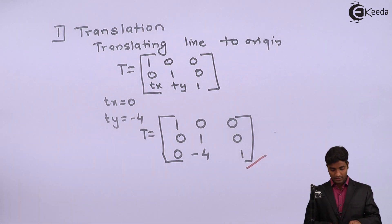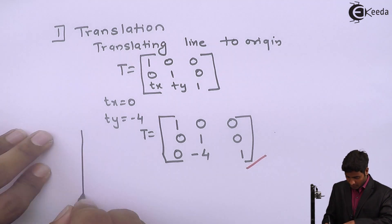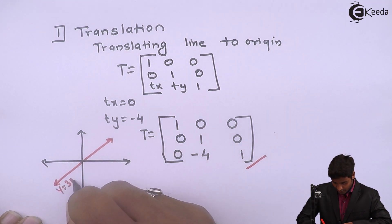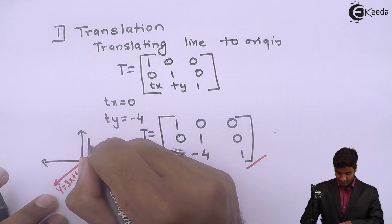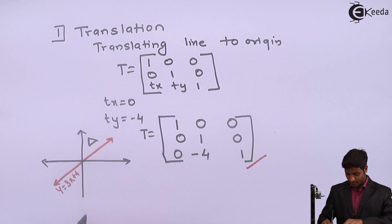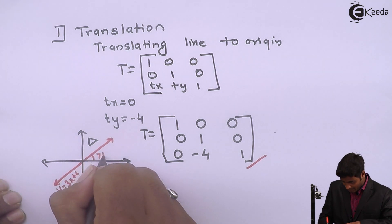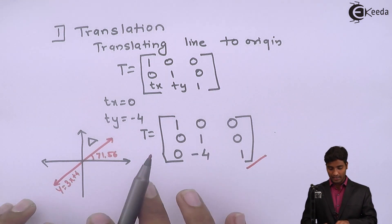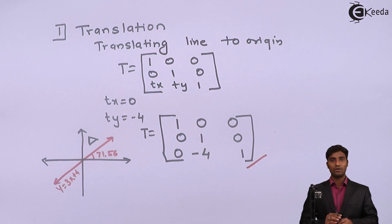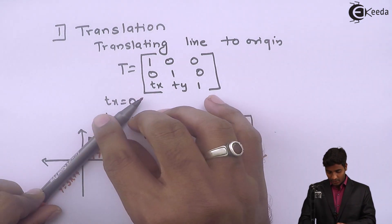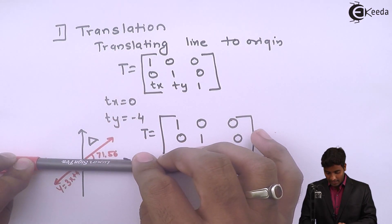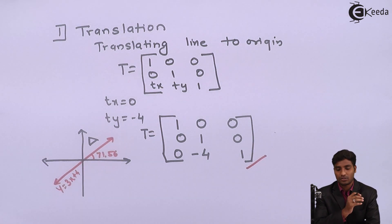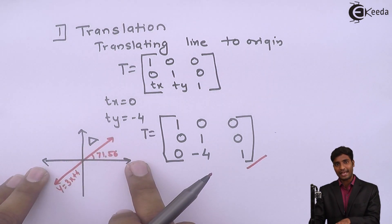After performing this translation, the line y = 3x + 4 will pass through the origin, with the triangle positioned nearby and the line still at 71.56 degrees. Now we will rotate this line so that it coincides with the x-axis, since we have the reflection-about-x-axis matrix ready to apply.